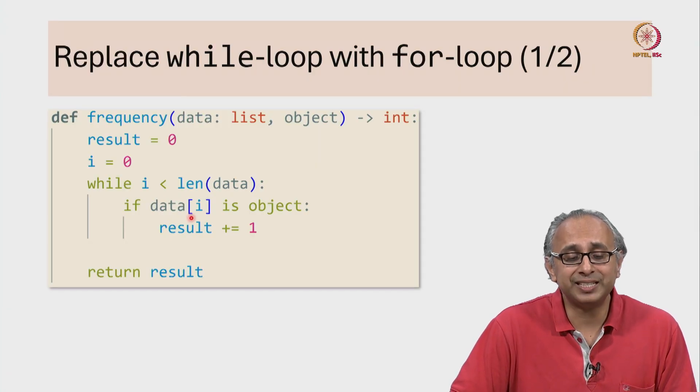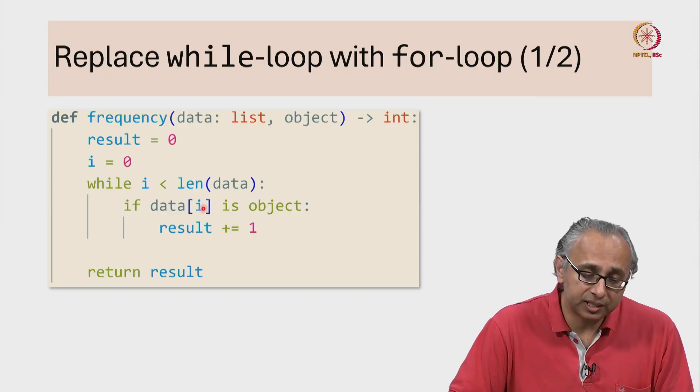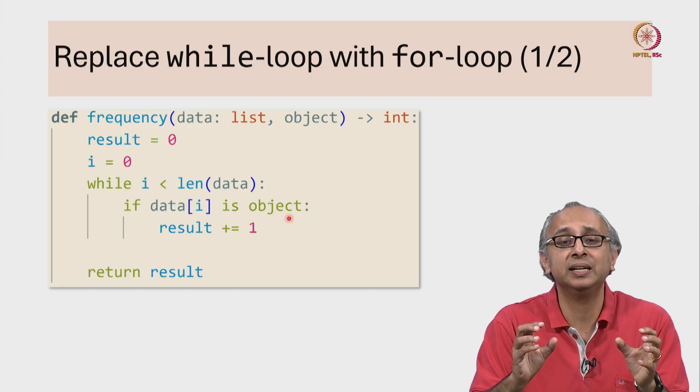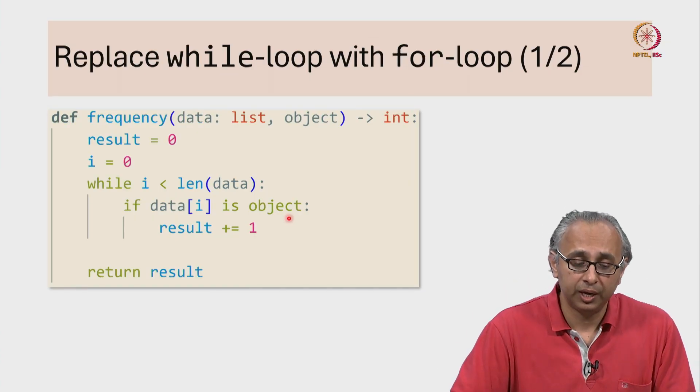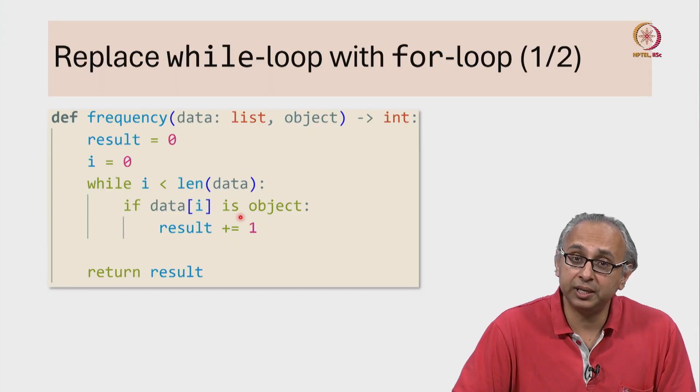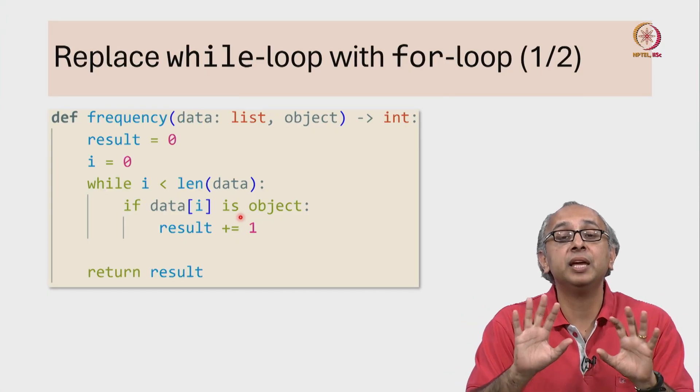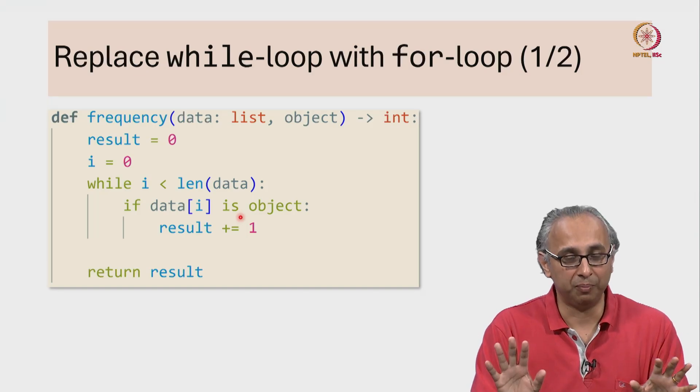check if data[i] is object. The 'is' operator checks if this object and this object are precisely the same object. We are not using equality because equality will check if two objects have the same value; they need not be the same object.